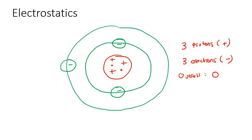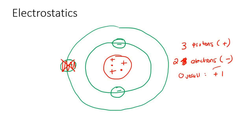Now if I take one electron away - so let's take away one electron - then we would only have two electrons. Three positives and two negatives gives you a total charge of positive one. So when you take electrons away, the molecule becomes more positive.